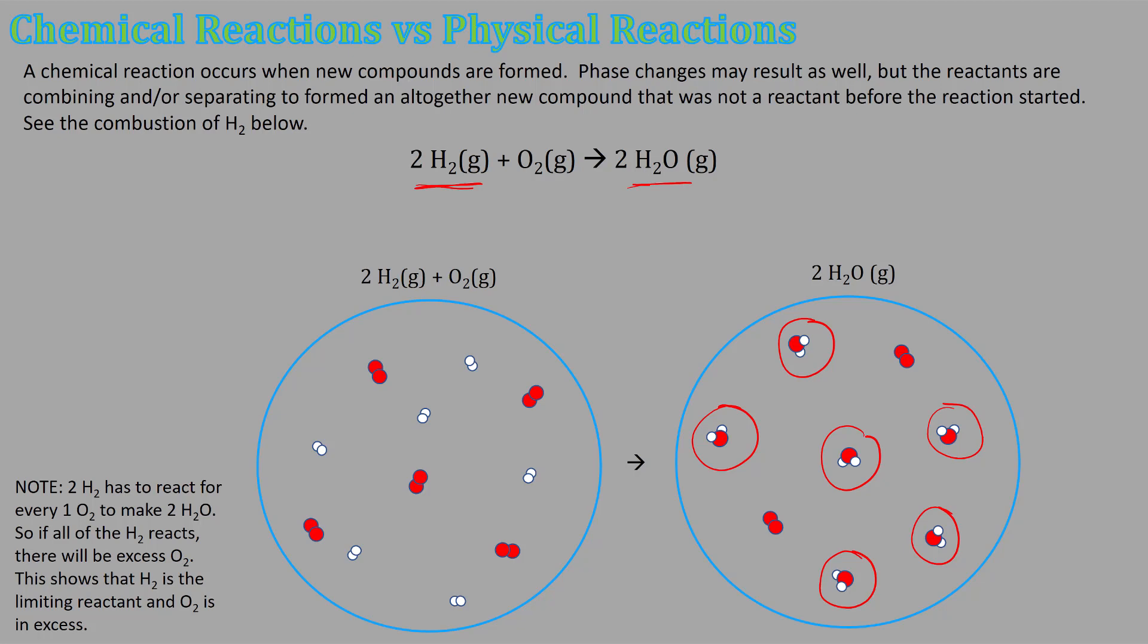We have two hydrogen bonding with one oxygen. We have one, two, three, four, five O2s here, and then we have one, two, three, four, five, six hydrogen. So we have five oxygen and six hydrogen.